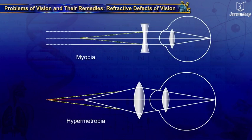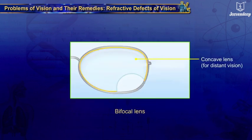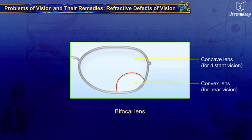If a person has both myopia, i.e. nearsightedness, and hypermetropia, i.e. farsightedness, the conditions combine and bifocal lenses are used. In a bifocal lens, the upper part is a concave lens to correct myopia for distant vision, and the lower part is a convex lens to correct hypermetropia for near vision.